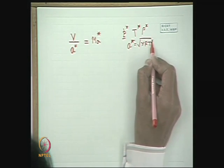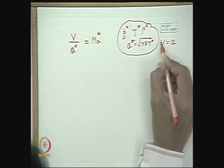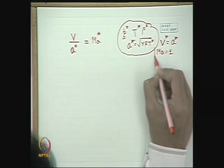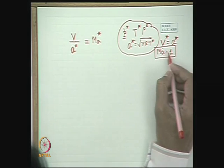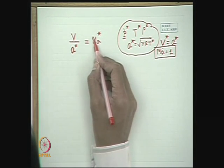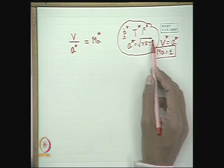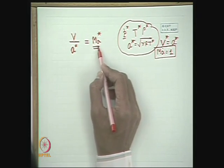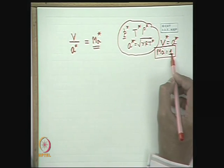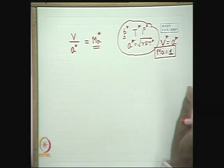The critical condition is defined when the flow velocity equals the speed of sound, so V* = A*. That means the Mach number at the critical condition is 1. However, we do not use the symbol MA* to denote the Mach number at the critical condition. Rather, MA* is the convention for the dimensionless velocity V/A*. So MA* is not the critical Mach number — it is V/A*, and this is the key distinction. The value of MA* at the critical section equals 1, but MA* in general varies from section to section.